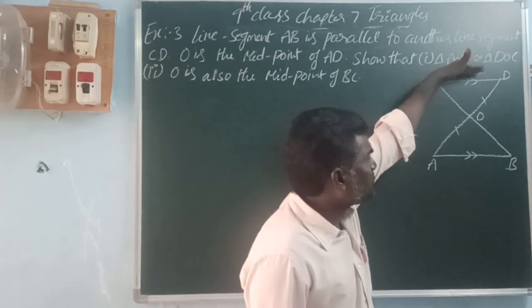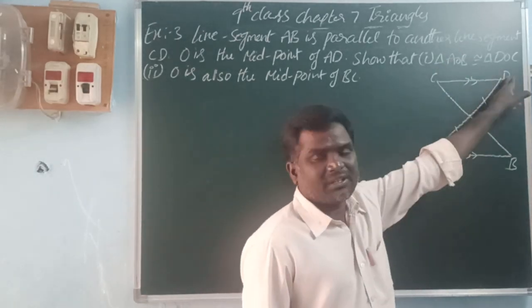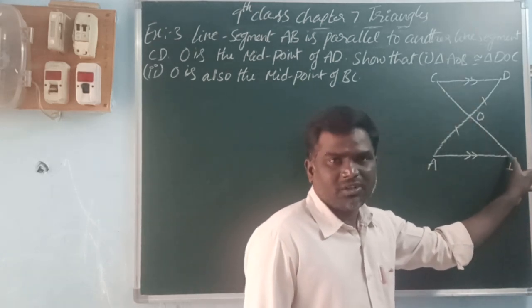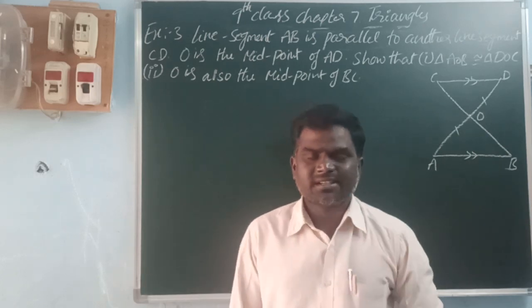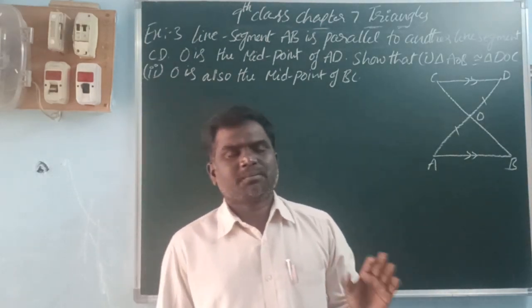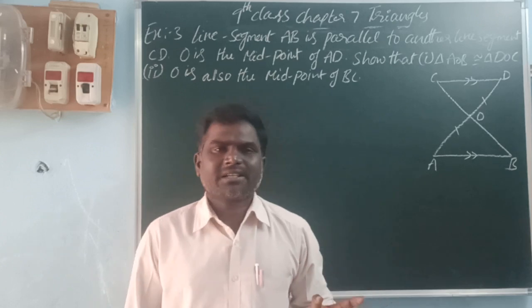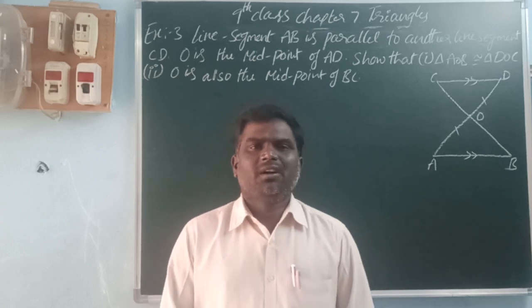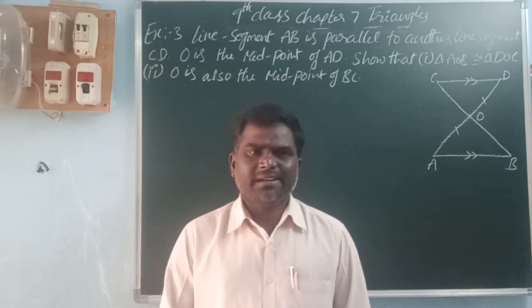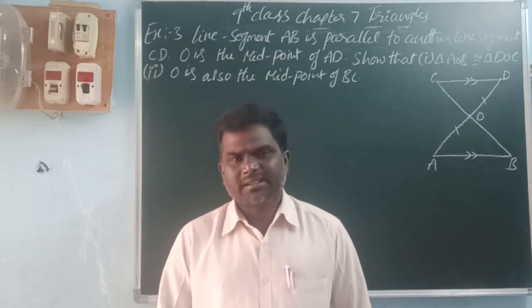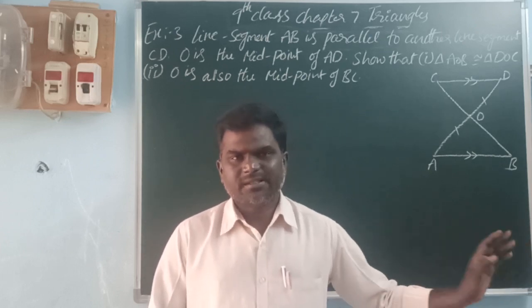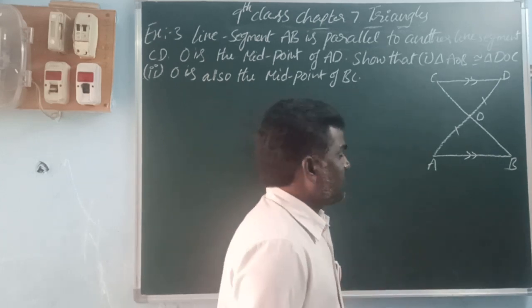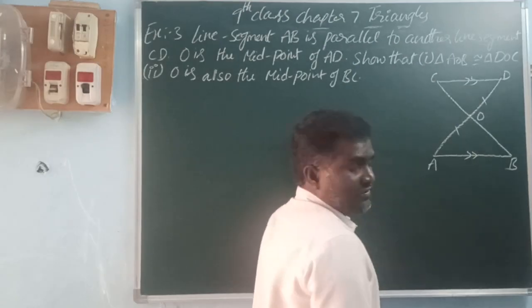Next, we draw a transversal line through the parallel lines. The conditions of parallel lines: corresponding angles are equal, vertically opposite angles are equal, alternate interior angles are equal, alternate exterior angles are equal, and the sum of co-interior angles is 180 degrees.